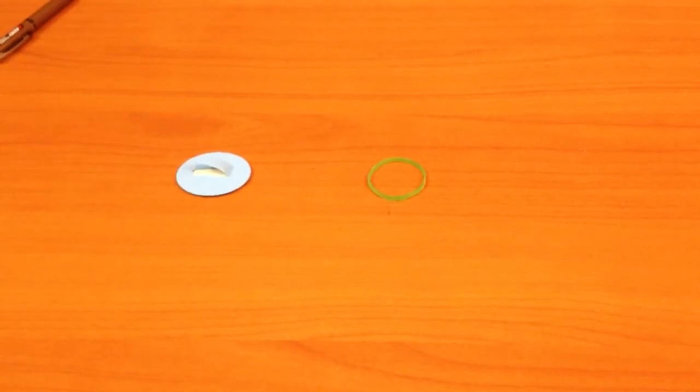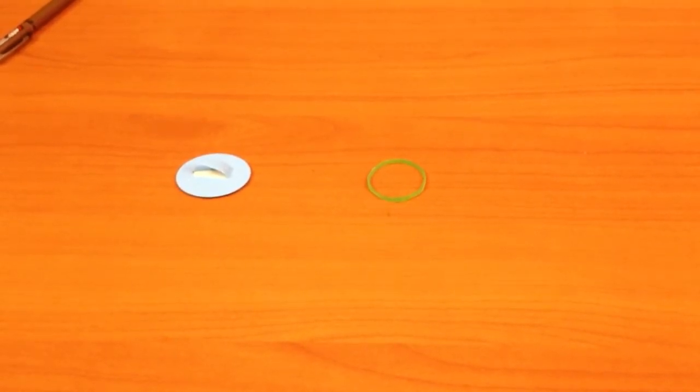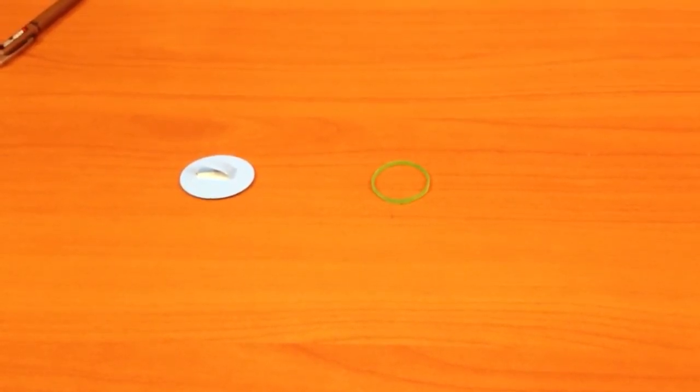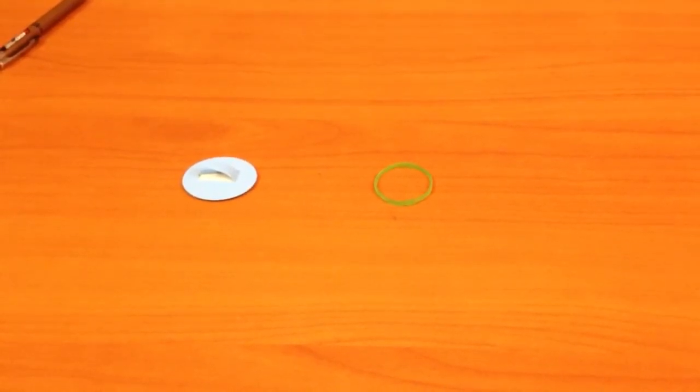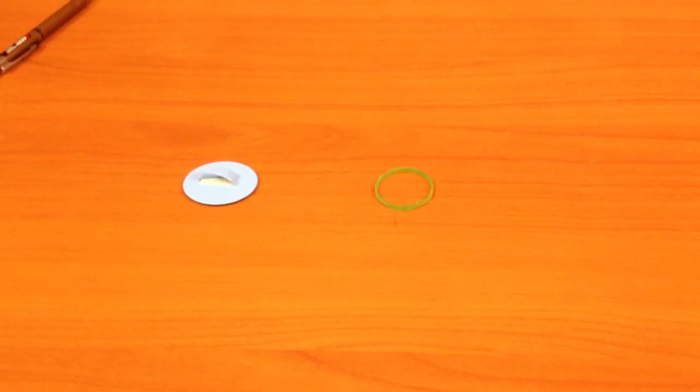When an elastic material is deformed due to an external force, it experiences internal force that opposes the deformation and restores its original state if the external force is no longer applied. This internal force is called elastic force.